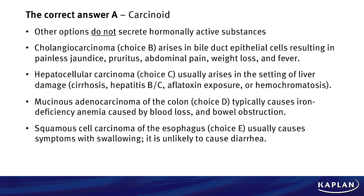Cholangiocarcinoma, choice B, arises in the bile duct epithelium, which results in painless jaundice, pruritus, and abdominal pain, weight loss, and fever. Hepatocellular carcinoma, choice C, arises in the setting of liver damage, typically cirrhosis, hepatitis B or C, aflatoxin exposure, or hemochromatosis.